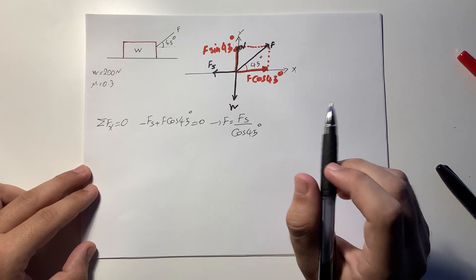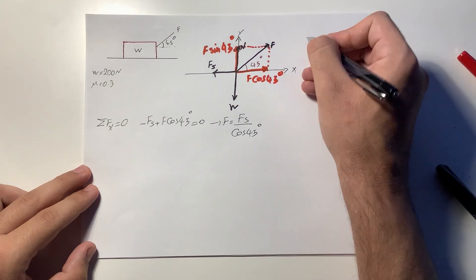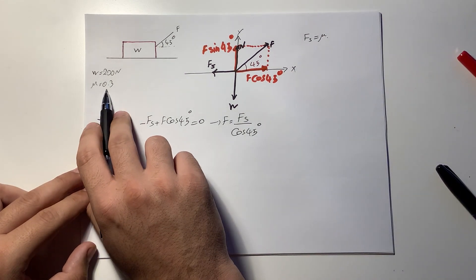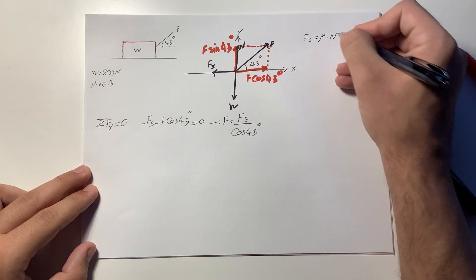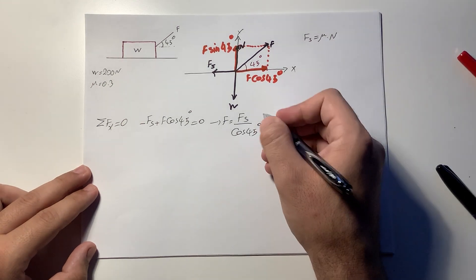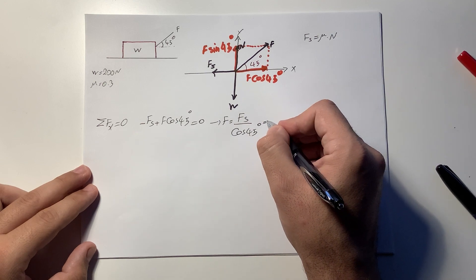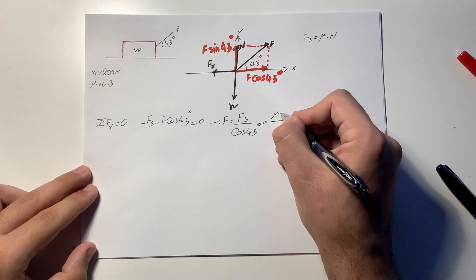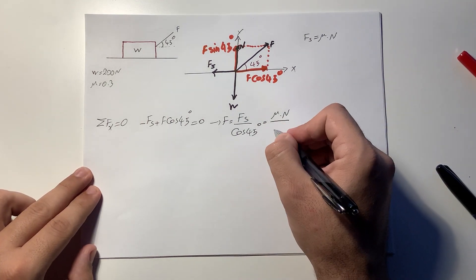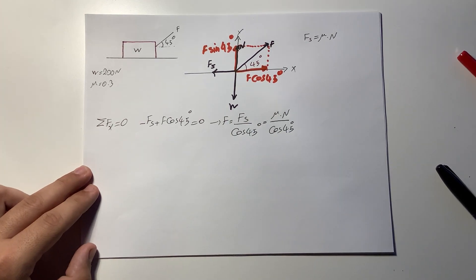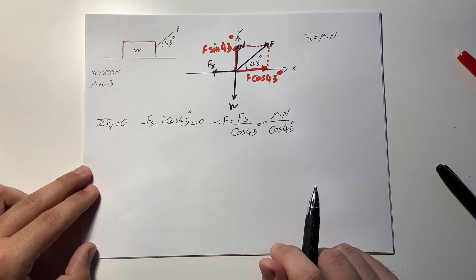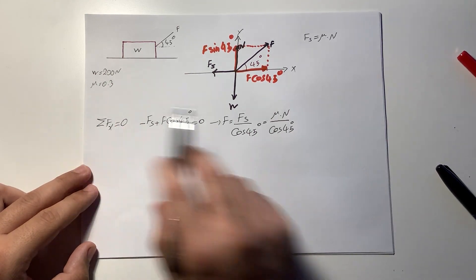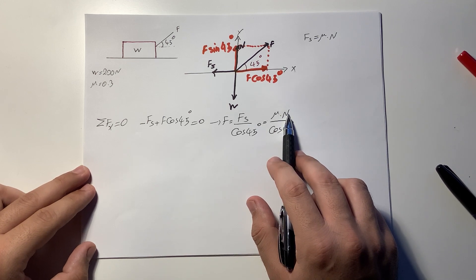By definition, the static friction force Fs = μ × N. So we can rewrite F as μN / cos(45°). We know μ and cos(45°), but we still need to find the normal force N, so we apply the equilibrium condition in the y-direction.